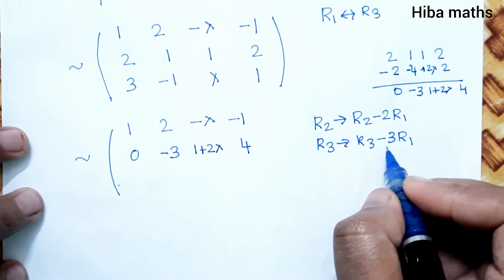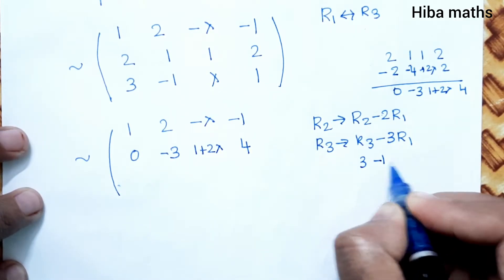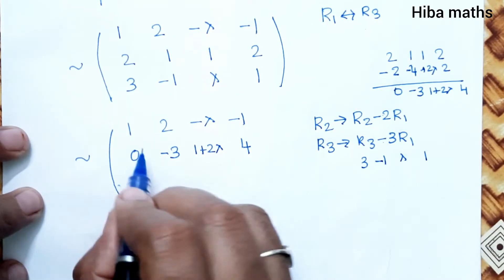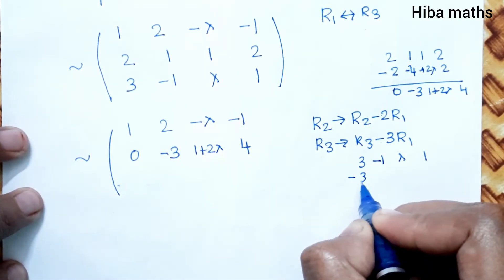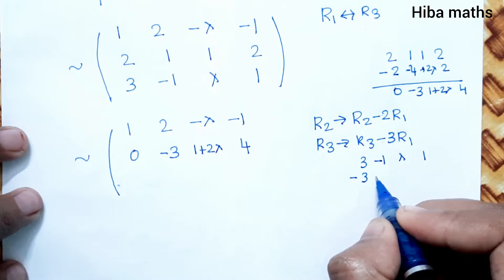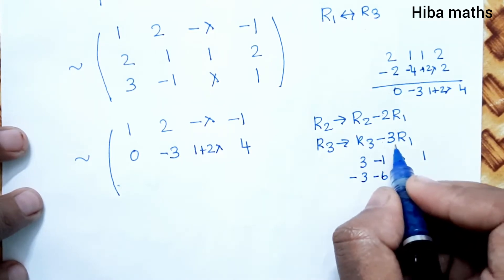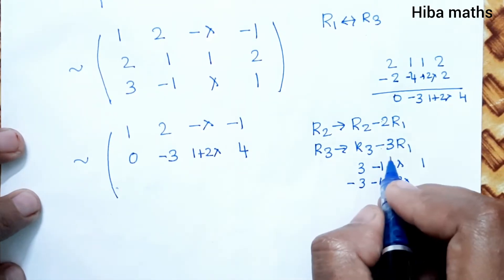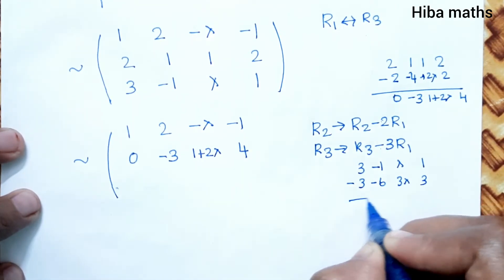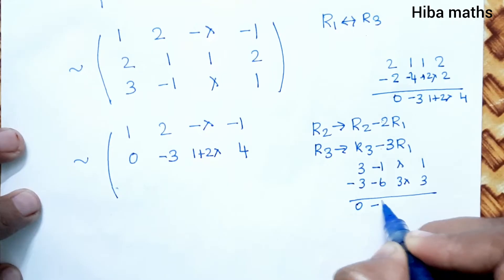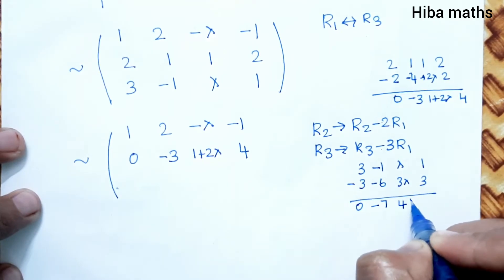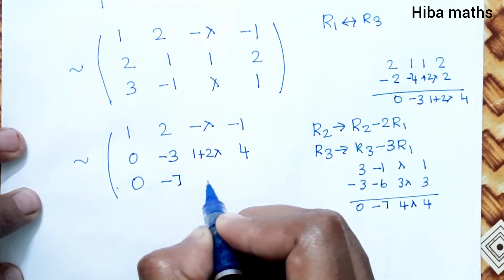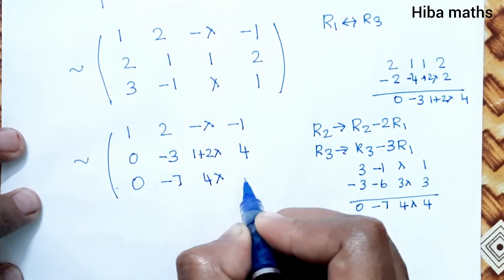For R3, R3 becomes R3 minus 3 times R1. Calculating: 3 minus 3×1 = 0; -1 minus 3×2 = -7; lambda minus 3×(minus lambda) = 4 lambda; 1 minus 3×(minus 1) = 4. So the new R3 is [0, -7, 4lambda, 4].